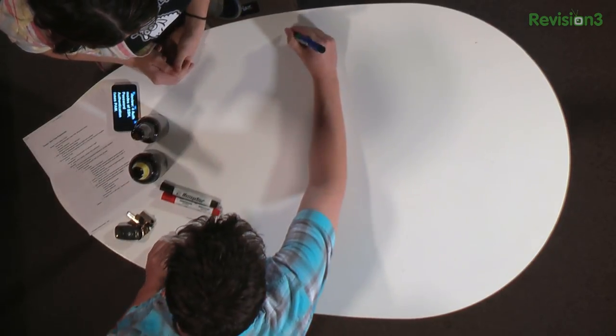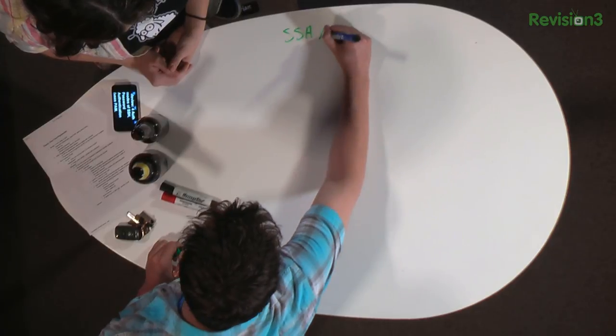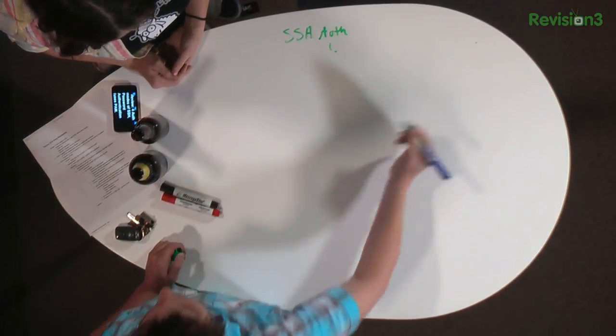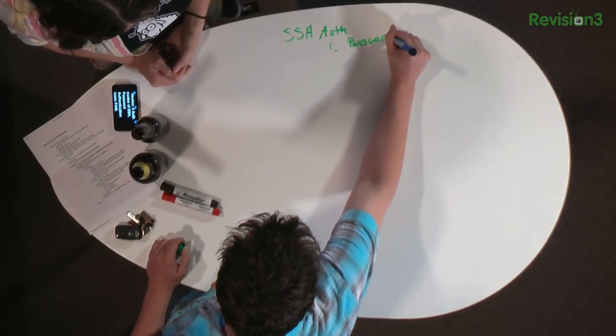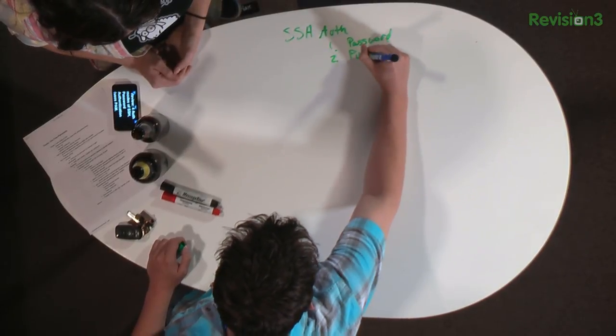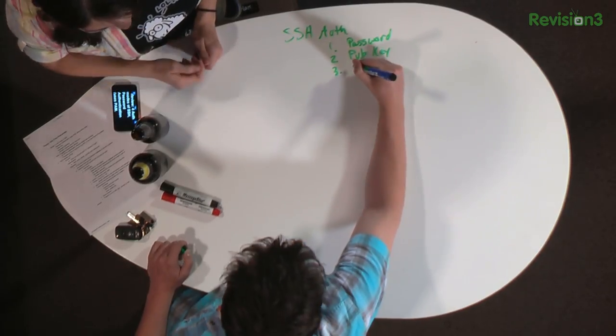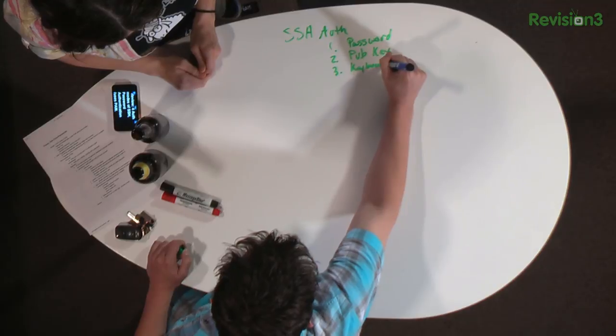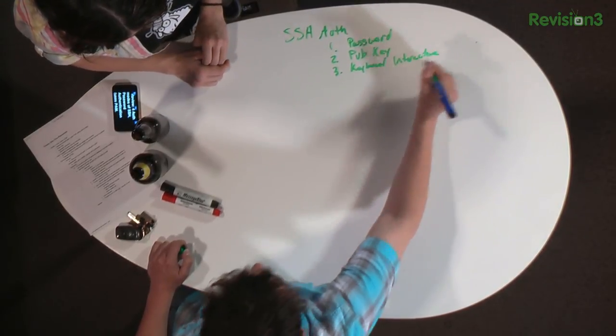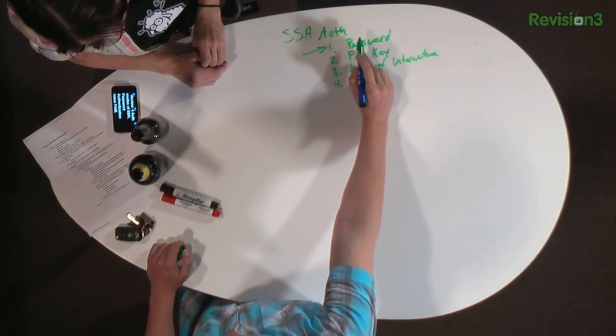Let's do a quick recap of the things we've covered before as far as SSH auth is concerned. There are four different modes of authentication in SSH. There's password, which we started with. There's public key, which is very secure. And then there's also keyboard interactive, which we didn't really touch on. The thing about keyboard interactive is it's mostly used for one-time passwords, except in this case we're actually going to be using password authentication for one-time passwords.